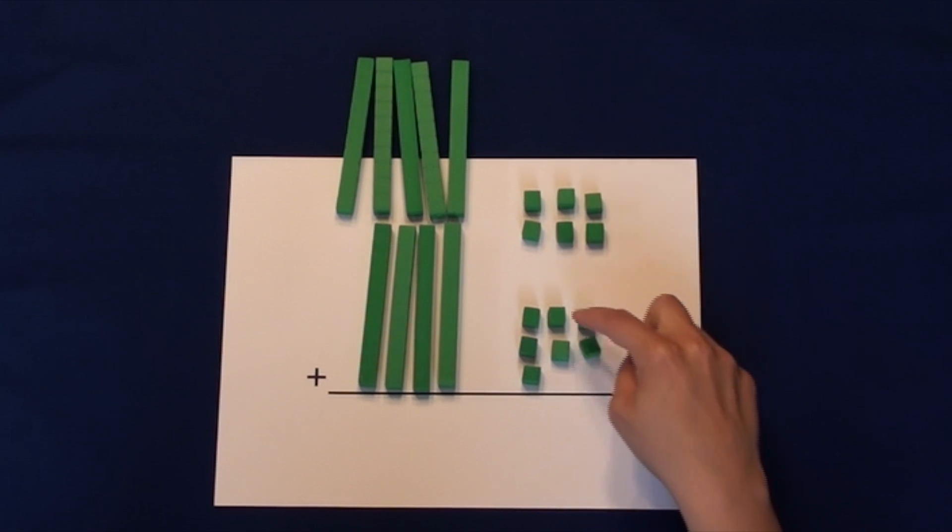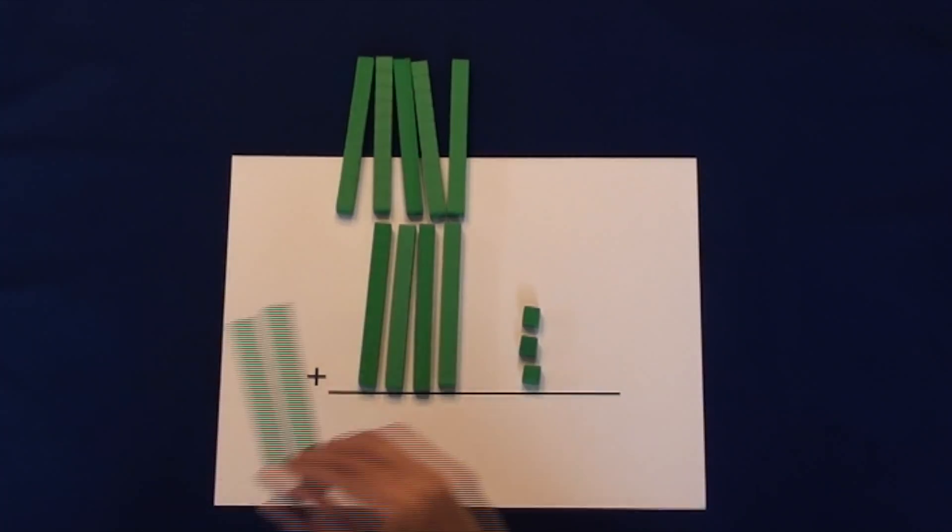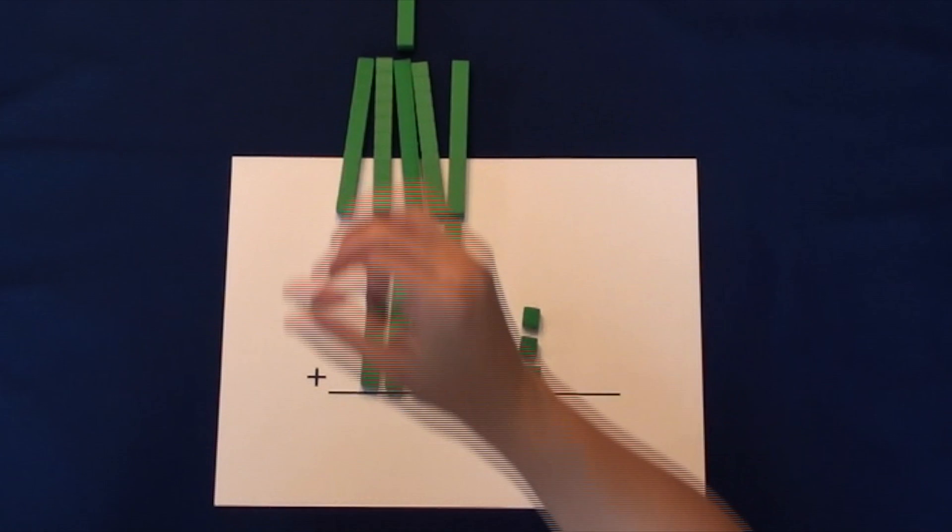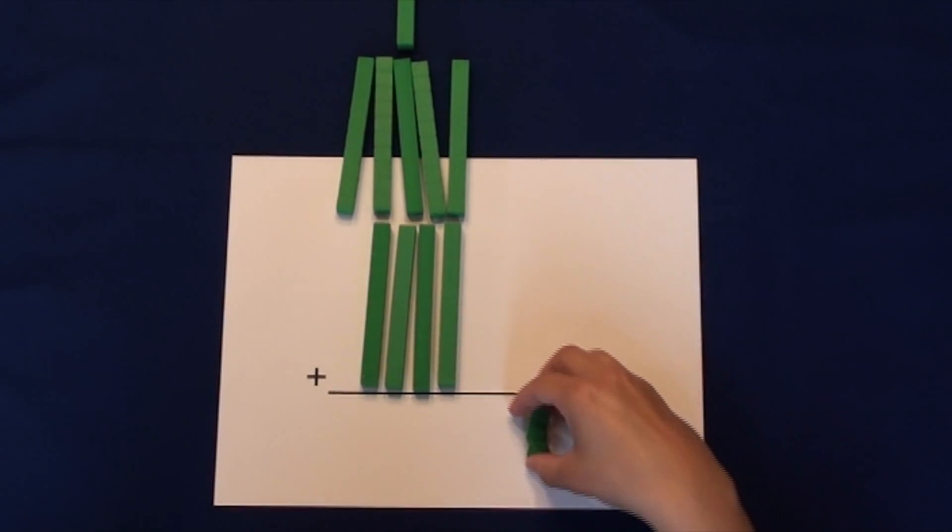Since 13 is more than 9, we can trade in or regroup 10 ones for a new 10. We have 3 remaining ones, and throw our new 10 on top to be with its 10 friends. We drop the 3 down to the solution row because we have finished adding the 1's column.